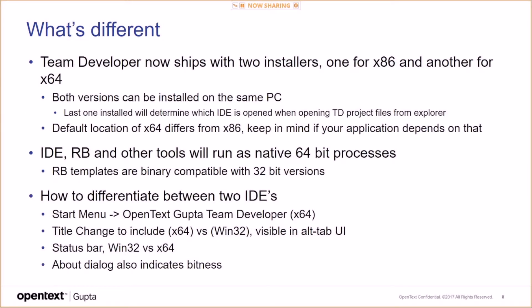We don't know when that is yet, but we are ready — we offer everything you need to make that move. So, what's different in TeamDeveloper 64-bit? TeamDeveloper ships with two installers, one for x86 and another for x64. They are both unlocked with the same installation key, and both versions can be installed on the same PC. The last one installed will determine which IDE is opened when opening TD project files from Explorer. The default install location for x64 differs from x86, so keep that in mind if your application depends on directory structure.